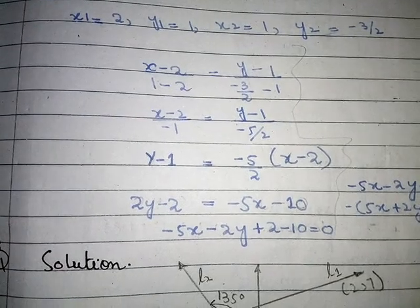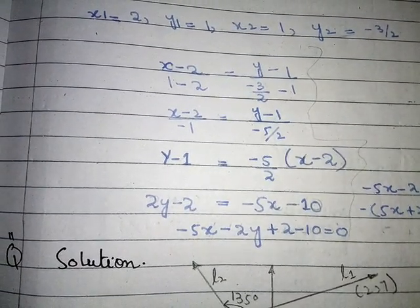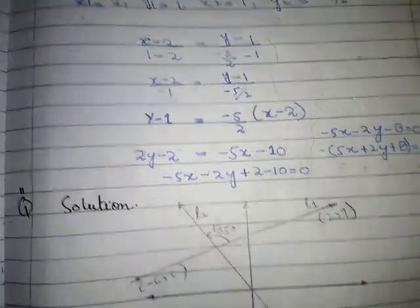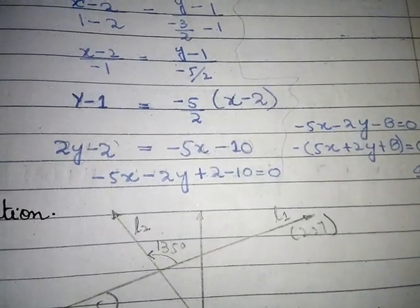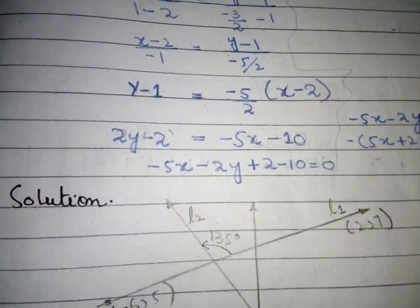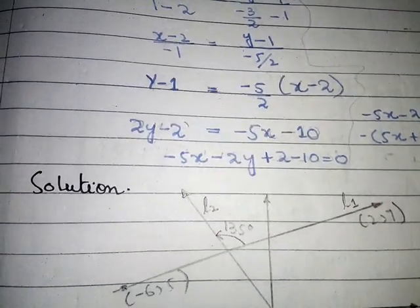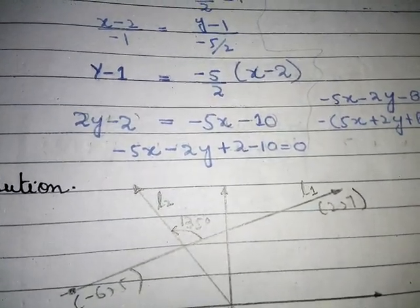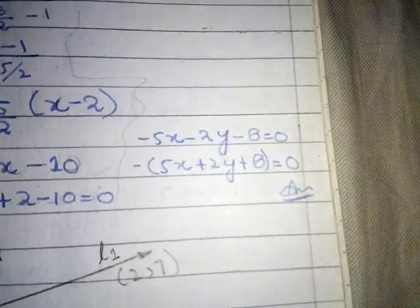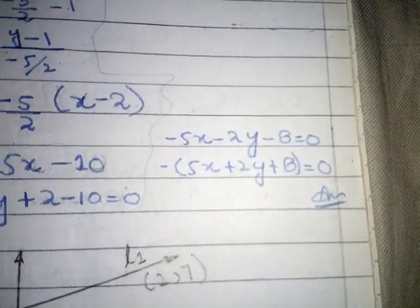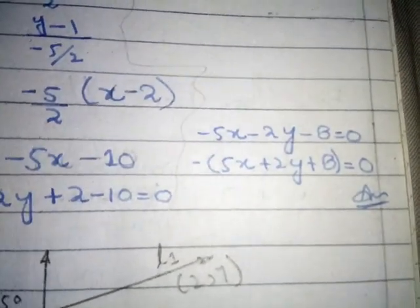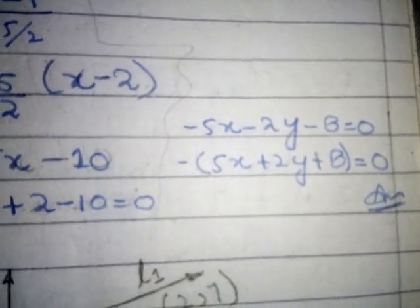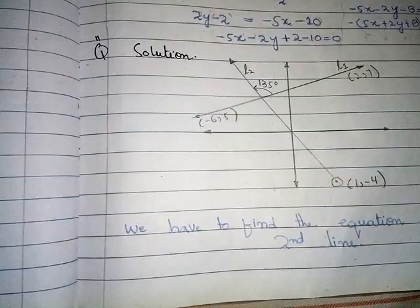x - 2 upon -1 = (y - 1) upon -5/2. Cross multiplying: 2(y - 1) = -5(x - 2), so 2y - 2 = -5x + 10. Rearranging: -5x - 2y + 2 - 10 = 0, giving -5x - 2y - 8 = 0. Taking minus common: 5x + 2y + 8 = 0. This is the required equation of AB.